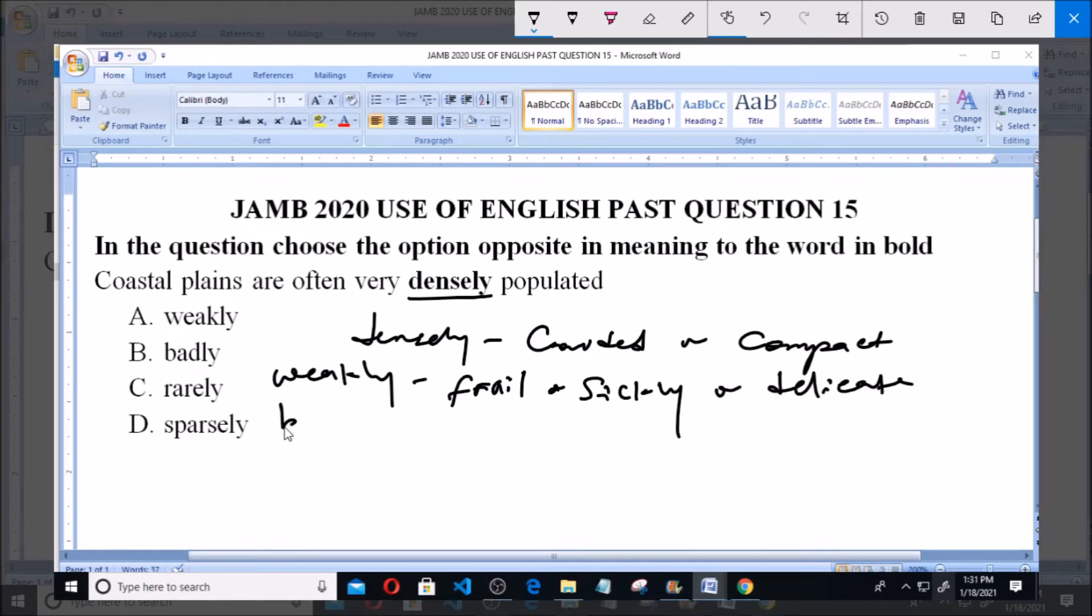Option B says badly. When you say something is badly, like badly populated, I am trying to say it is very much populated because badly here just represents very much or to a great degree.